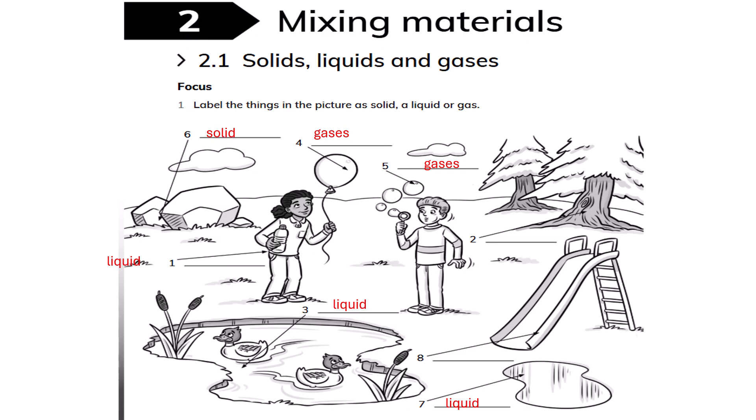Label the things in the picture as solid, a liquid, or gas. All the objects in the picture from 1 to 8 have been labeled as solid, liquid, or gas.